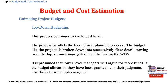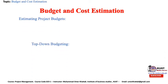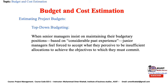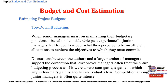It is presumed that lower-level managers will argue for more funds if the budget allocation is in their judgment insufficient. When senior managers insist on maintaining their budgetary positions based on their considerable past experience, junior managers feel forced to accept what they perceive as insufficient allocation. Lower-level managers often treat the entire budgeting process as a zero-sum game — a game in which any individual's gain is another's loss. Competition among junior managers is often quite intense. The advantage of this top-down process is that aggregate budgets can often be developed quite accurately, with budget categories stable as a percent of the total, making for higher predictability.